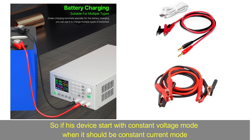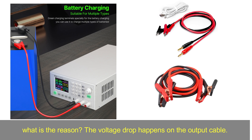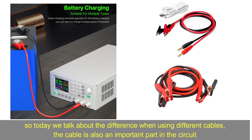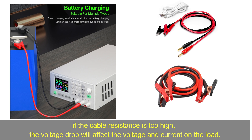So if the device starts with constant voltage mode when it should be constant current mode, what is the reason? The voltage drop happens on the output cable. Today we talk about the difference when using different cables. The cable is also an important part in the circuit — if the cable resistance is too high, the voltage drop will affect the voltage and current on the load.